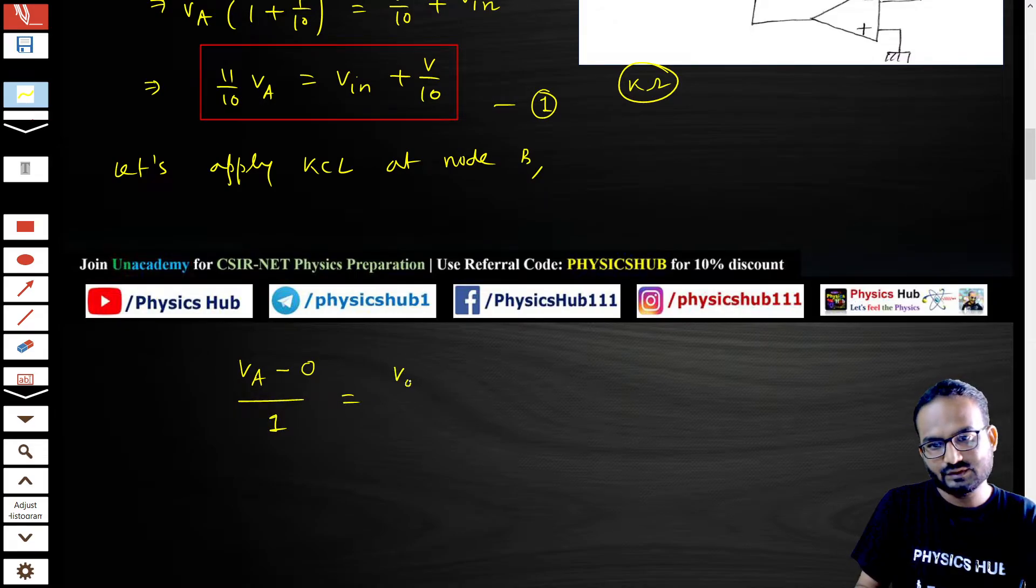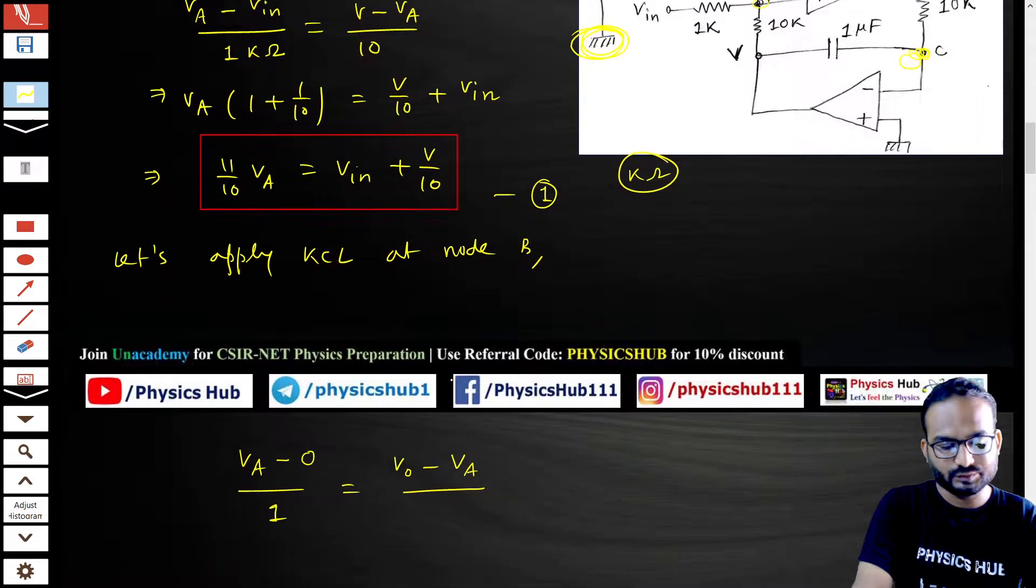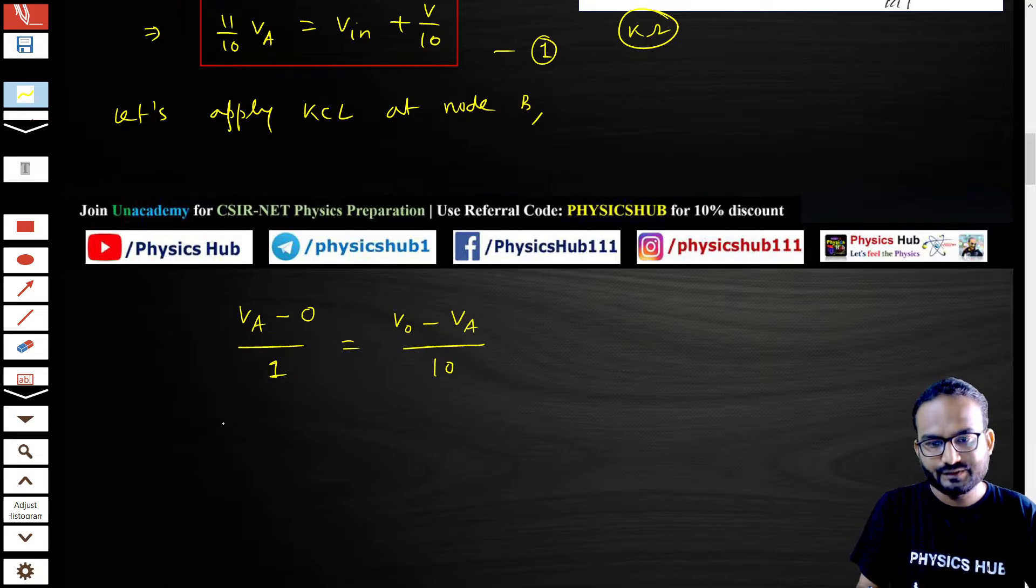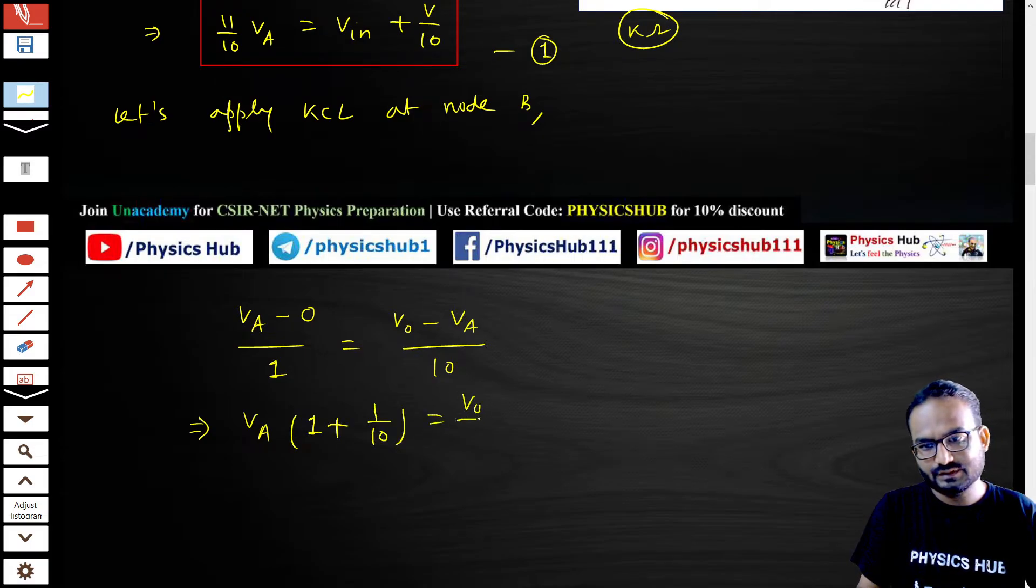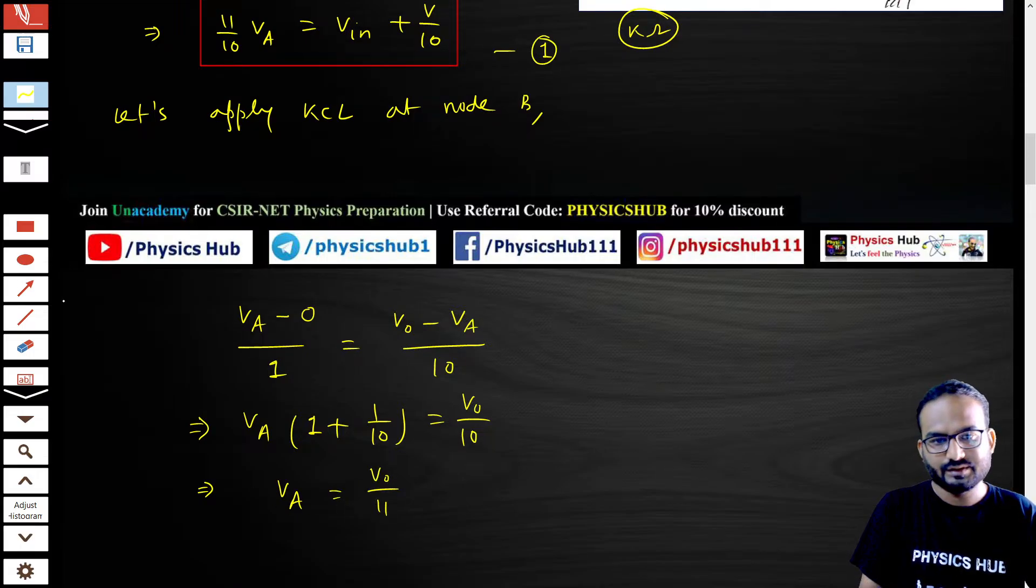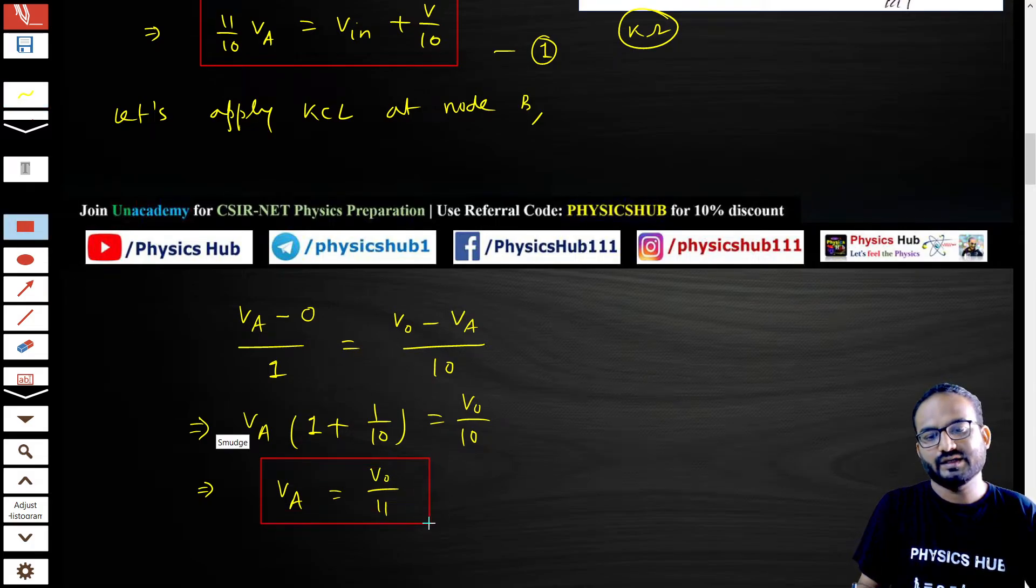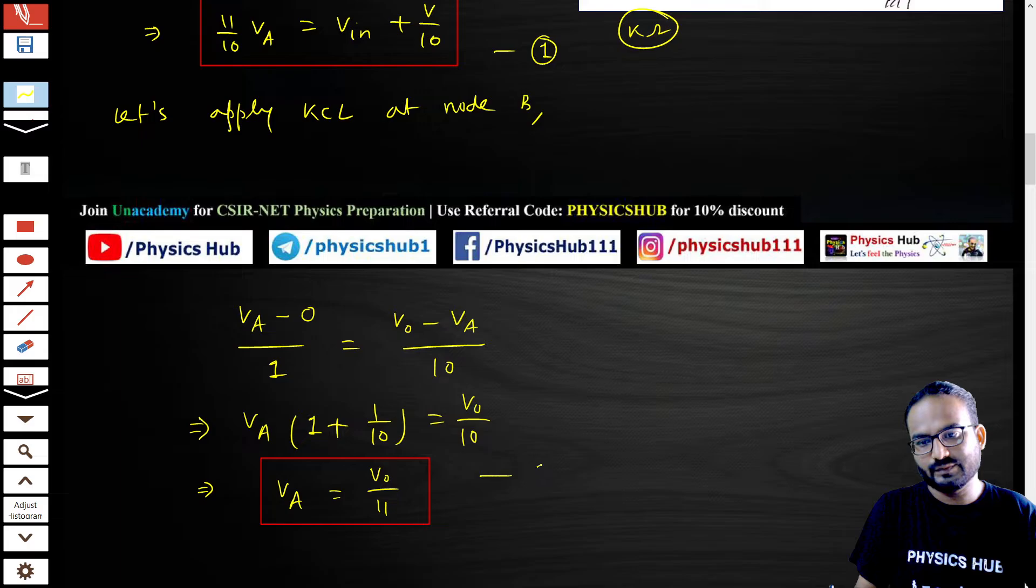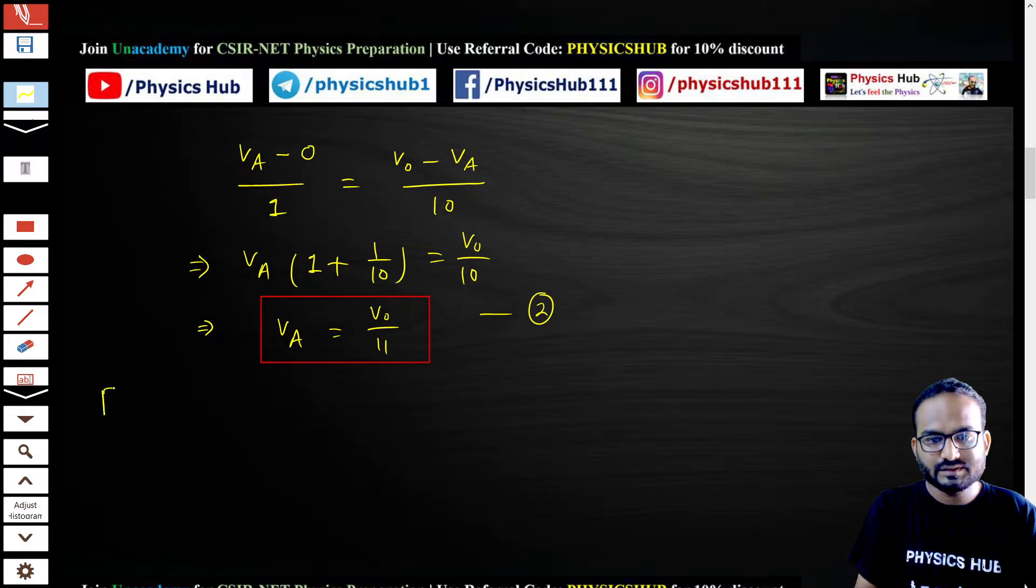This would equal V_A minus V_naught divided by 10. We can take V_A common: 1 plus 1 upon 10 equals V_naught upon 10. From here, 11 by 10 V_A, so V_A equals V_naught upon 11. Another equation we have got by applying KCL to node B. Let's say this is equation number two.